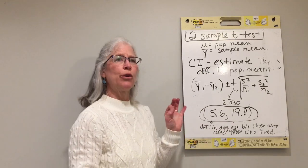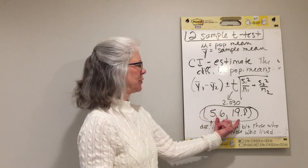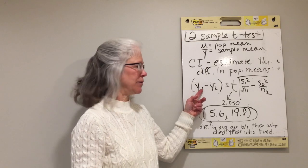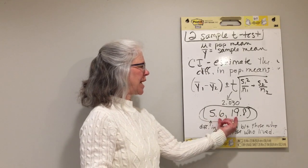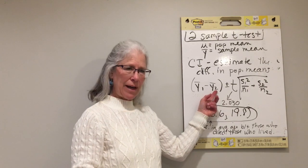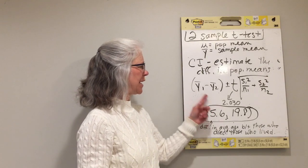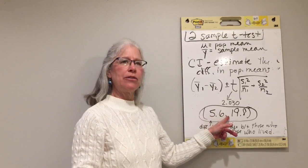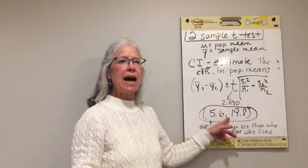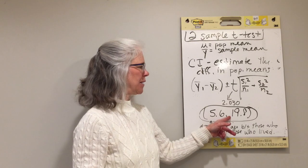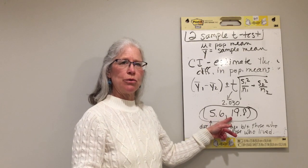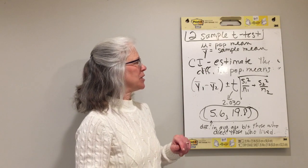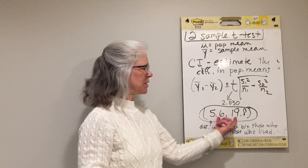When we look at a confidence interval for a difference, first we look at the signs. In this case they're both positive, so we know the first group has the higher mean — those who died have a higher mean age than those who lived. If both had been negative, we'd know the survivors were older. If the confidence interval crosses zero, going from negative to positive, then zero is a reasonable guess at the truth, and we'd say there was no significant difference in average age between the two groups.